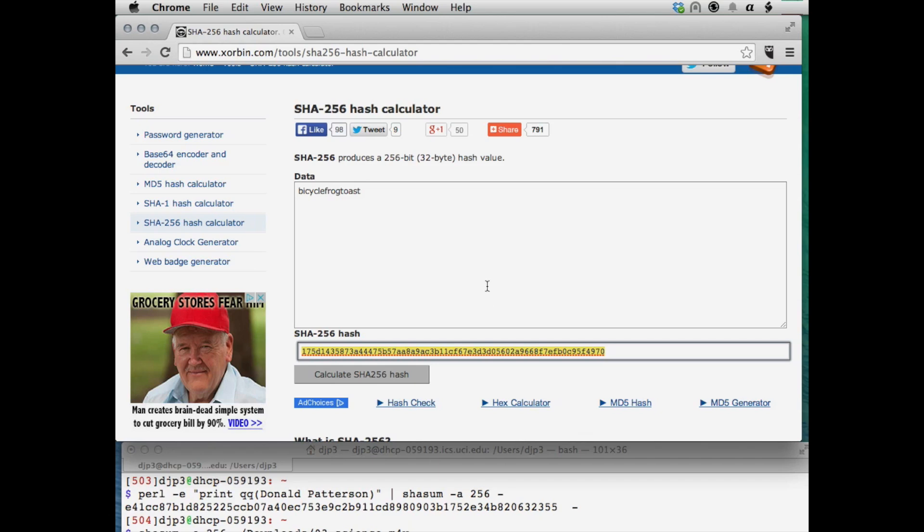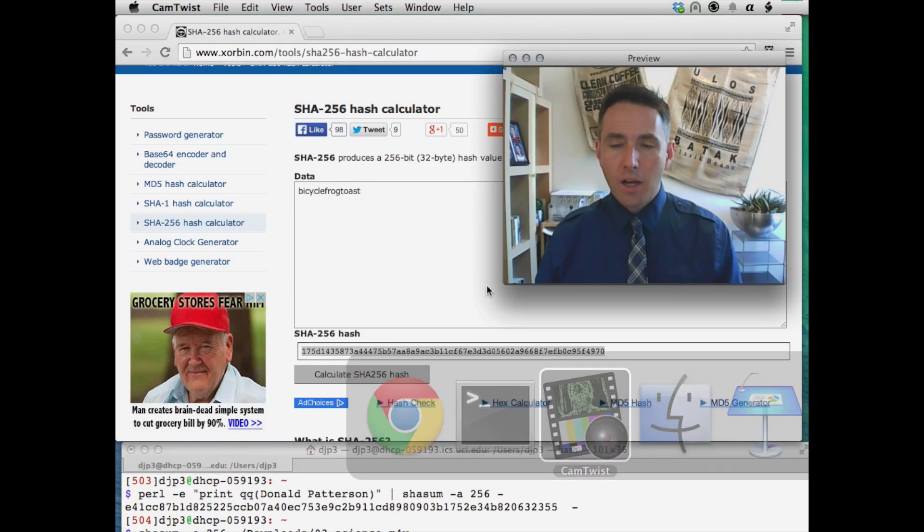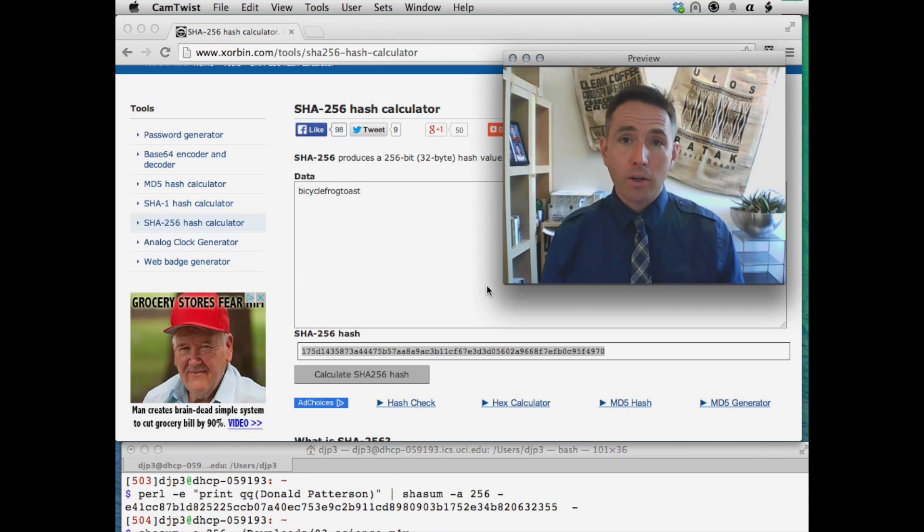And that keeps my password, my original password, secure because the ability to go backward from that fingerprint that you see there - I mean you can kind of guess it intuitively, although mathematically it's a much stronger argument - you can see intuitively that it's very hard to go from this function that starts with 175 and recover the password bicycle frog toast.